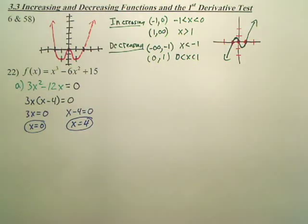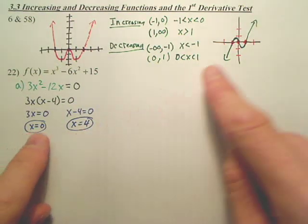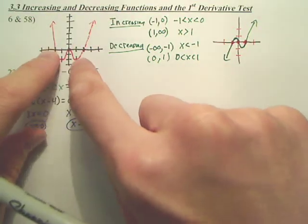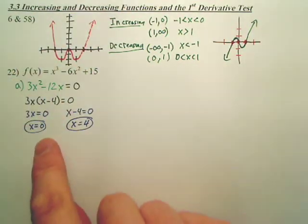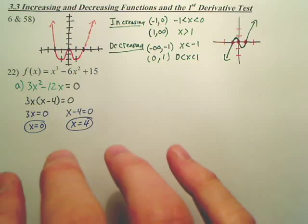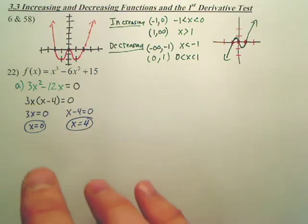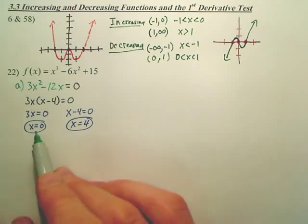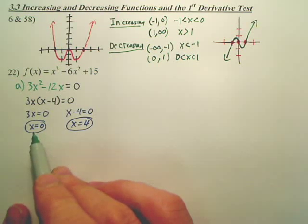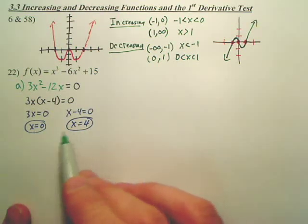The second part of the question is, it wants to know where is this graph increasing? Where is it decreasing? Now, if these are critical numbers, aren't they hills or valleys? So aren't the critical numbers where you're increasing, decreasing change? That's why they're critical. Critical numbers are points where your slopes change from positive to negative or something.